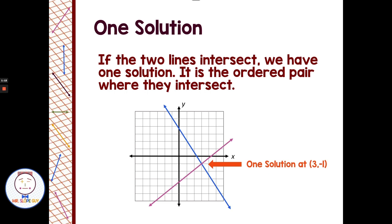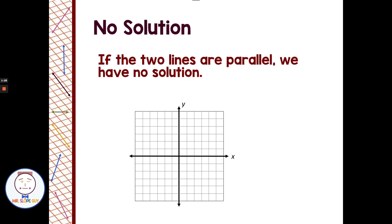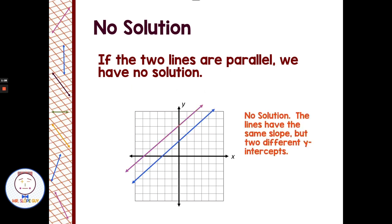So the first thing that can happen with systems of equations is we get two lines that intersect, and our solution is the point where they cross. The second thing that could happen when we graph two lines on a coordinate plane is that they're parallel, and parallel lines do not cross and therefore have no solution.